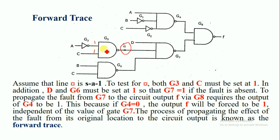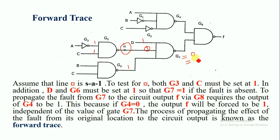In addition, input D and the gate G6 output must be set to 1 such that the G7 output equals 1 when the fault is absent. Since we have a stuck-at-1 fault at G5, if G5 is 1 then the G7 output equals 0. If there is no fault, G5 may be 0 such that the output of G7 would equal 1, but due to the stuck-at-1 fault the output of G5 is always 1.